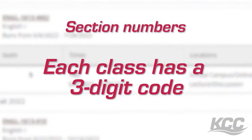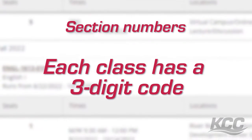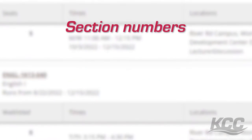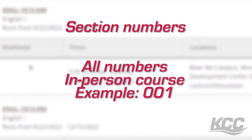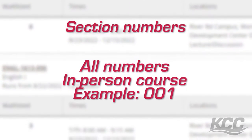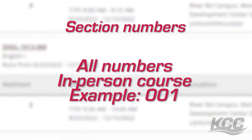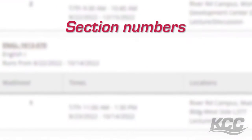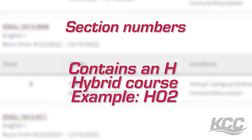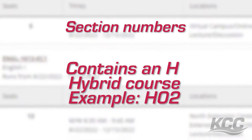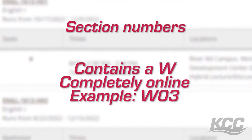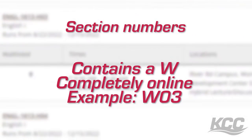Each section has a course number with a three-digit code at the end that refers to its classroom options. Sections with a three-digit code that is all numbers is an in-person course. If the code contains the letter H, it is a hybrid course. If the code contains the letter W, it is completely online.